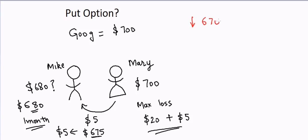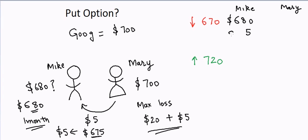After one month, the stock can either go down — say to $670 — or up to maybe $720. Let's look at Mike's profit if it went to $670. He has to purchase it for $680. He bought it at $680 but the stock is now at $670, so he lost $10 there. But he was paid five dollars by Mary, so his total loss is only five dollars.